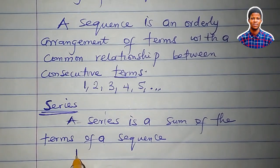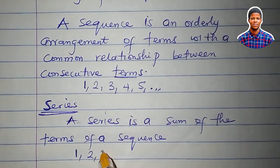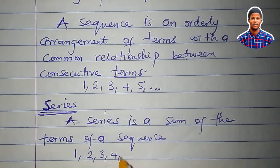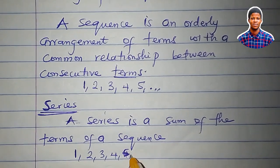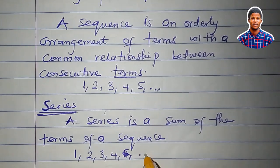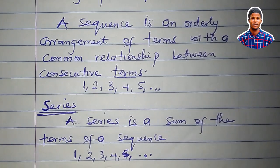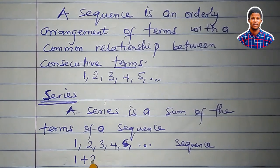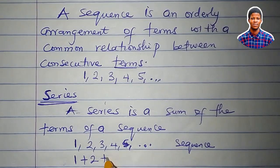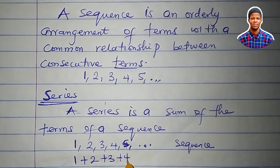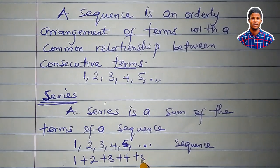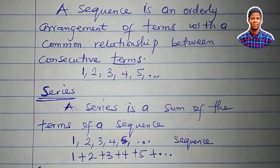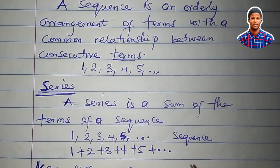For example, 1, 2, 3, 4, 5 and so on to infinity — that is a sequence. But 1 plus 2 plus 3 plus 4 plus 5 — that is a series.